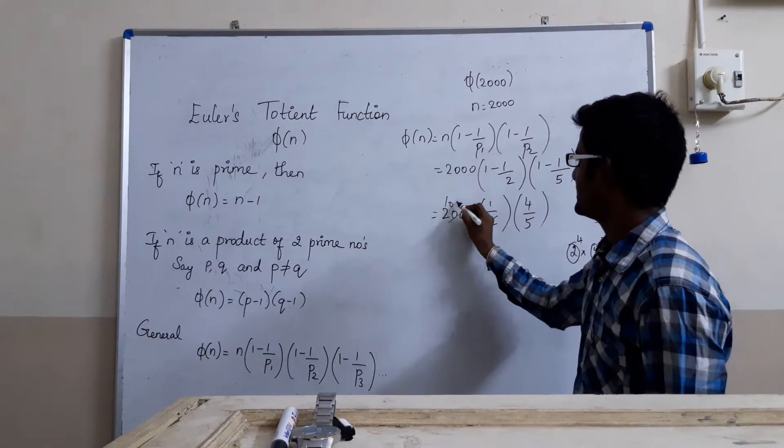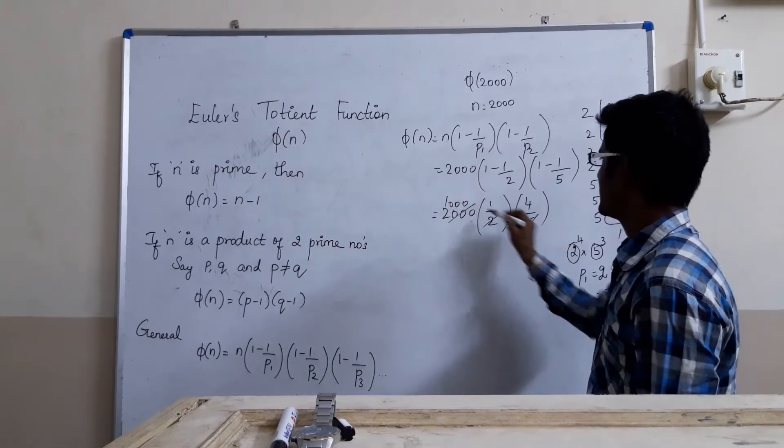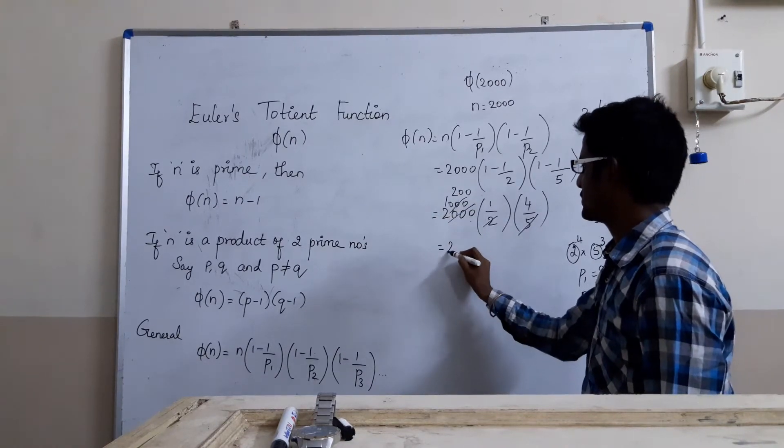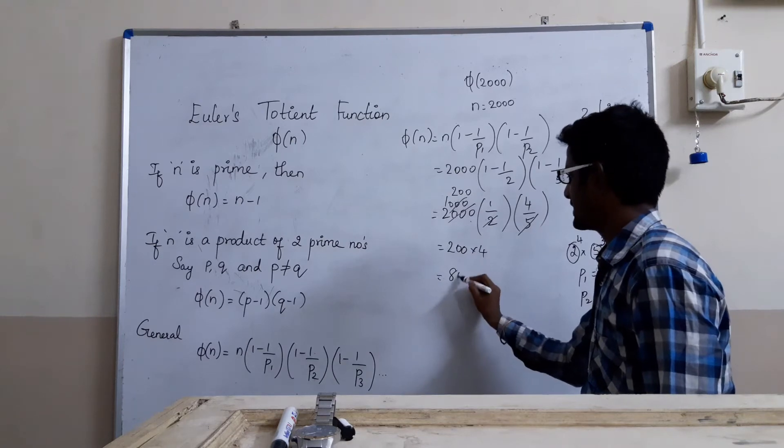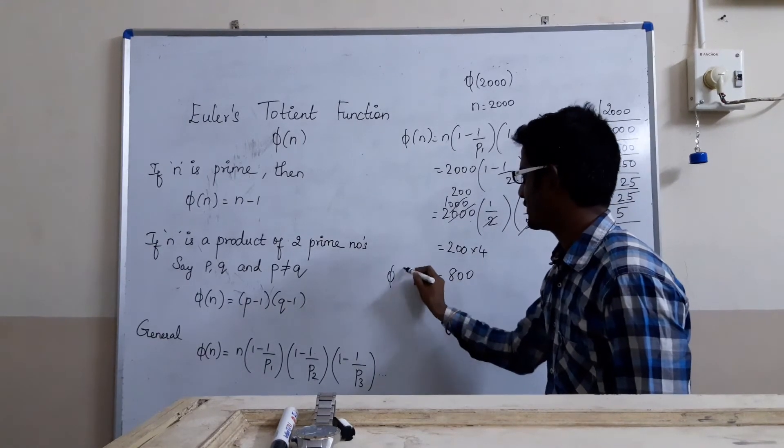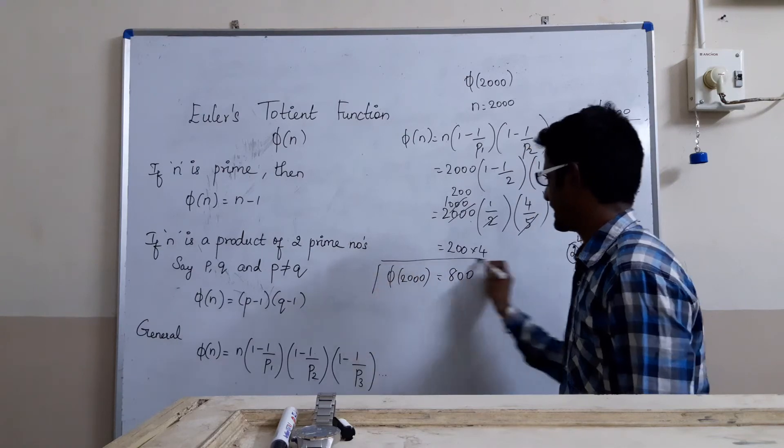2000 divided by 2 gives 1000, times 4/5 gives 200, times 4 equals 800. So phi of 2000 is equal to 800.